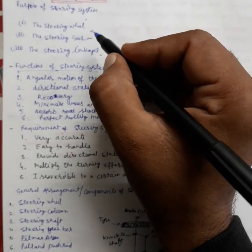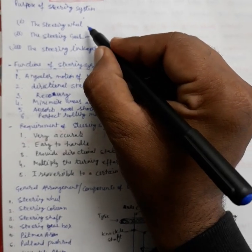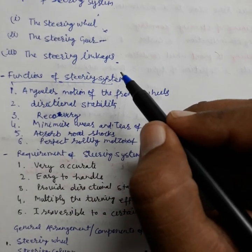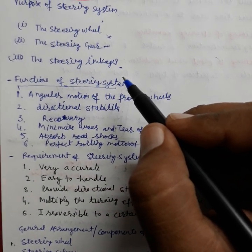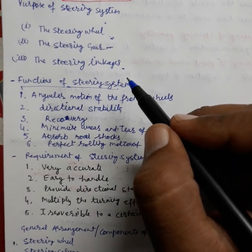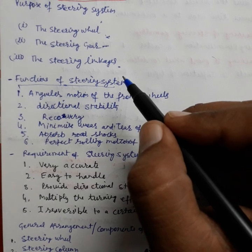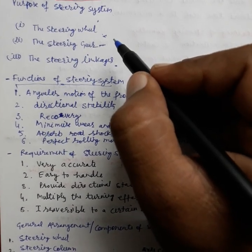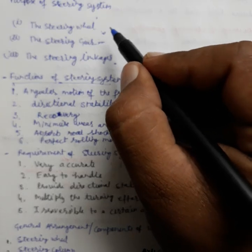Then the system includes the following parts. First is steering wheel, which the driver controls to control the vehicle from the steering wheel.